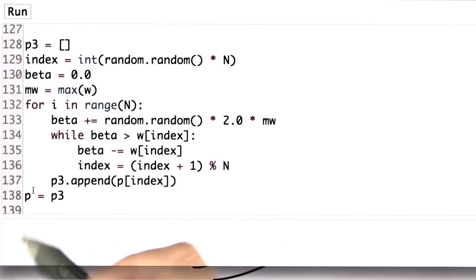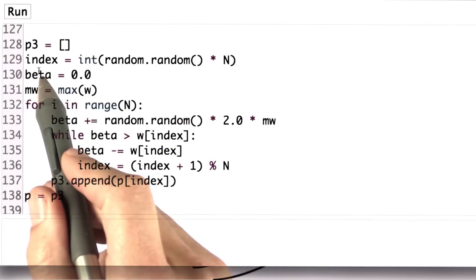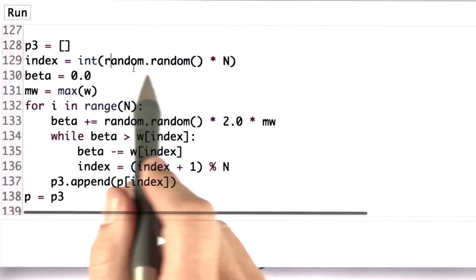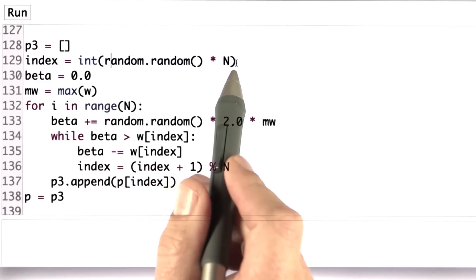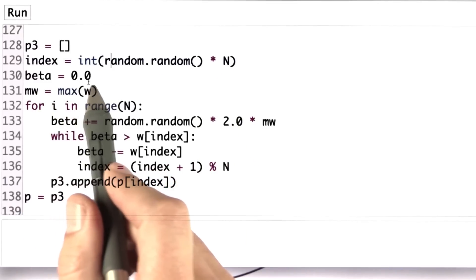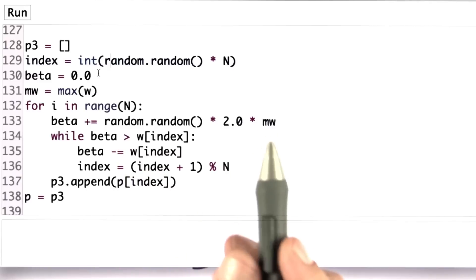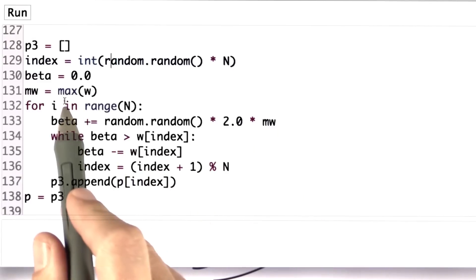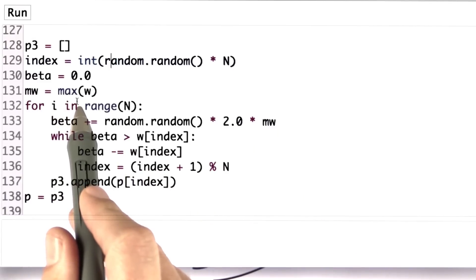So that's the resampling step. My very first index is drawn at random. This is a uniform random sampler of all the indices. And then I have this running variable beta that I set to 0.0, and I cache away the max of the w just to be slightly faster.